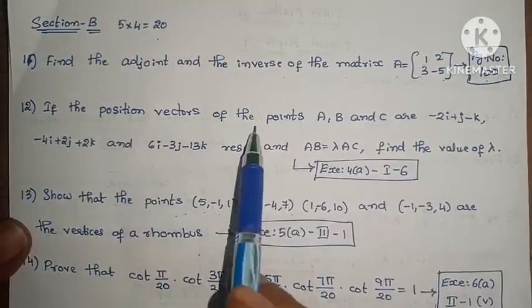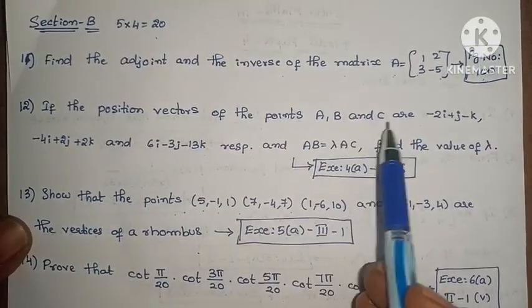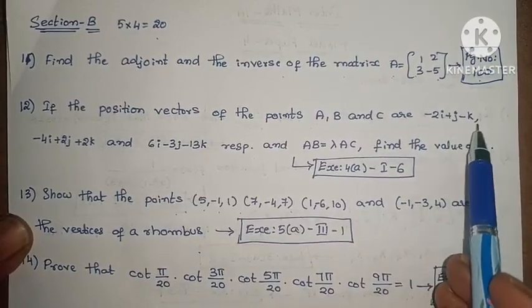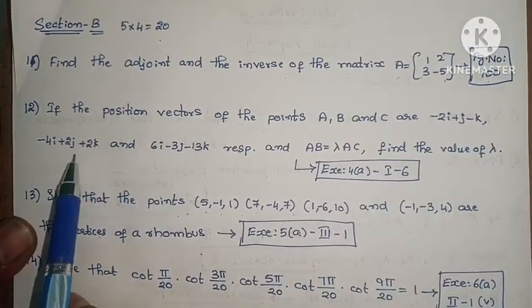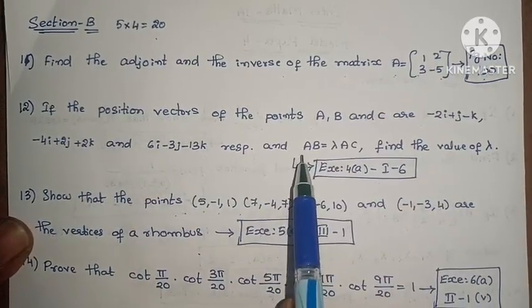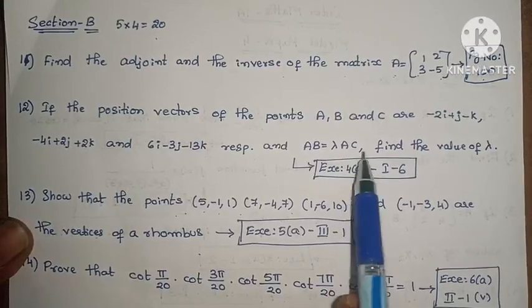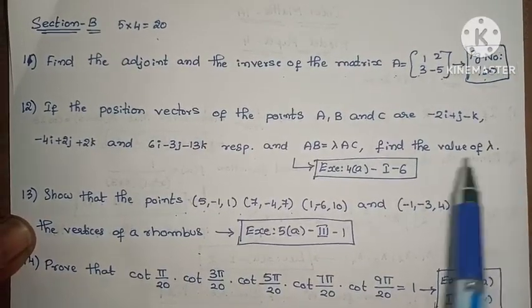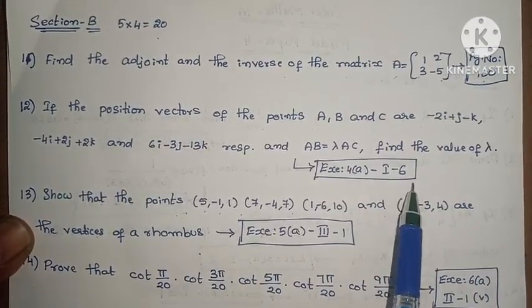Next, students, if the position vectors of the points A, B, and C are minus 2i plus j minus k, minus 4i plus 2j plus 2k, and 6i minus 3j minus 13k respectively, and AB equals lambda AC, find the value of lambda. Exercise 4, First Roman, Sixth one.